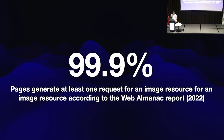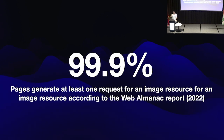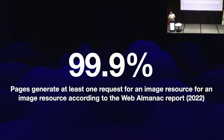To back this claim — I don't know how many of you have heard of the Web Almanac project, but do check it out. The Web Almanac takes HTTP archive data and every year produces a report on the most interesting findings. It has about 16 to 20 chapters — one dedicated to JavaScript, HTML, CSS, SEO, HTTP, and one on media. In the 2022 report, we found that about 99.9% of websites in the HTTP archive data would generate a request for an image resource.